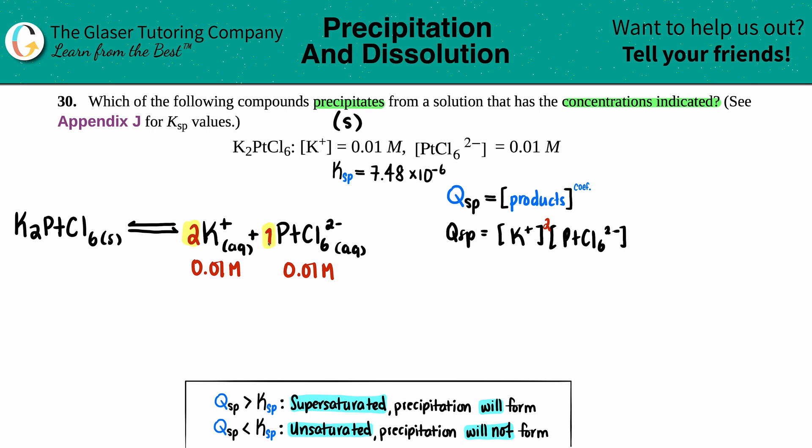This number was 0.01 and so was this number 0.01. Qsp equals 0.01 squared, so I'm going to square that and then times 0.01. I'm going to plug this all into the calculator one shot and let's see if your answer matches mine.